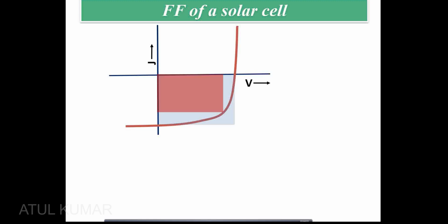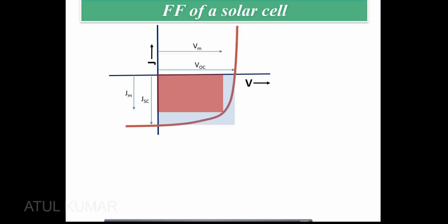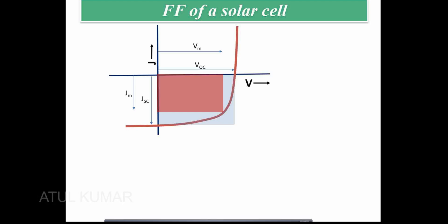In this solar cell, I'll show all the parameters: VM, VOC, and others. VOC is shown and JSC is shown by a blue color rectangle, while VM and JM are shown by a red color rectangle. VOC times JSC — the blue rectangle — is the power the cell would produce if it were ideal.